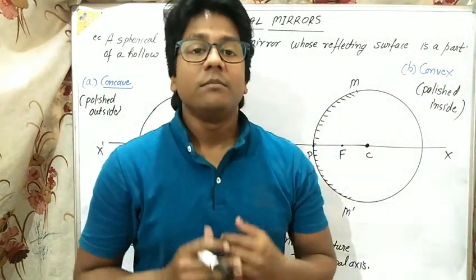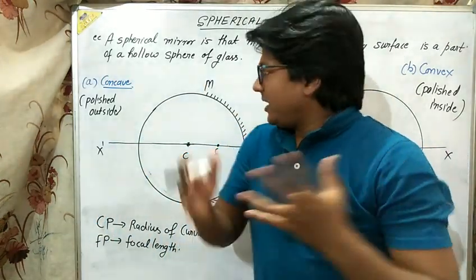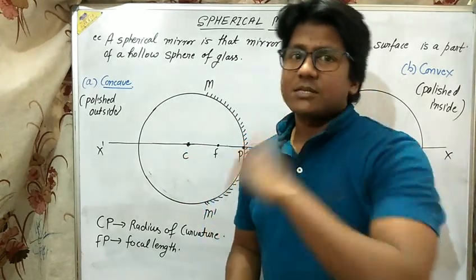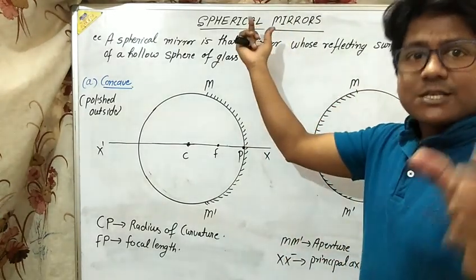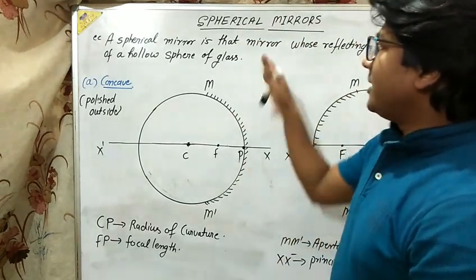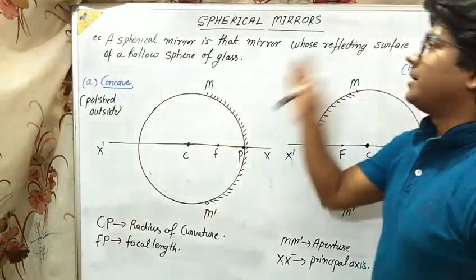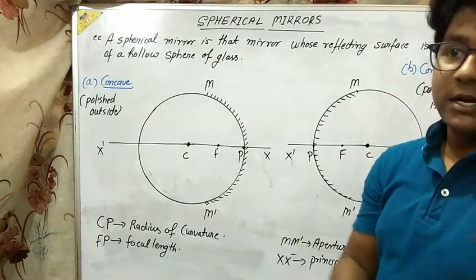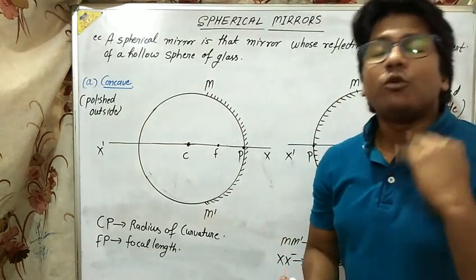Moving to the next topic: spherical mirrors. Students are often confused with concave and convex at first. A spherical mirror is a mirror whose reflecting surface is a part of a hollow sphere. In a hollow sphere you have two parts: one is concave and another one is convex.